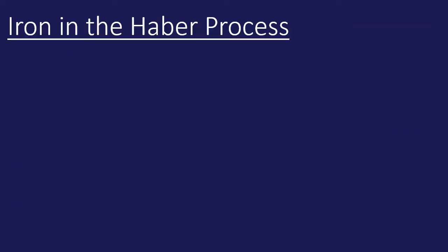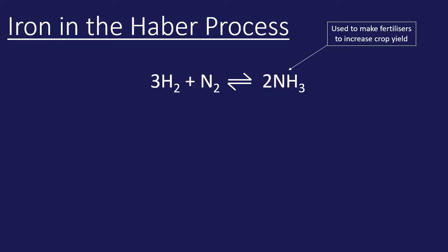The second example is iron in the Haber process. The Haber process is a name given to the process used in industry to make ammonia, which is NH₃. That's really important because it's used to make fertilizers, which increases crop yield.